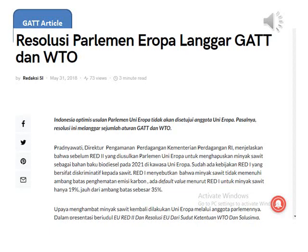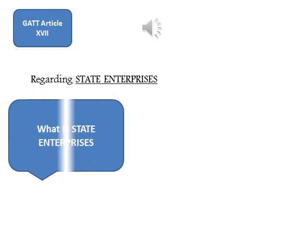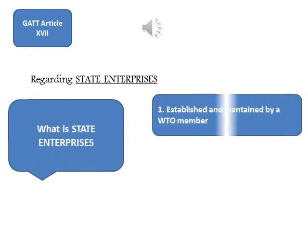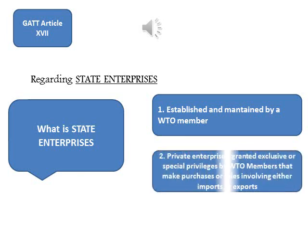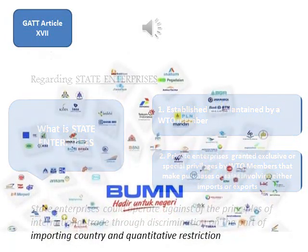Article 13 provides for MFN treatment in the administration of quantitative restrictions and supplements the disciplines under Article I. GATT Article 17 obliges WTO members to act in accordance with the rules of nondiscrimination, including the MFN rule. State trading enterprises are defined as: (1) state enterprises established or maintained by a WTO member, or (2) private enterprises granted exclusive or special privileges by WTO members that make purchases or sales involving either imports or exports. By making use of their monopolistic status, such enterprises could operate against the principles of international trade through discrimination on the part of the importing country and quantitative restrictions.